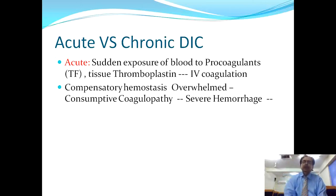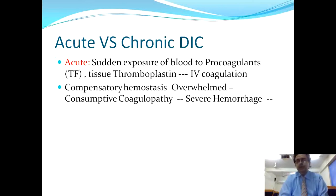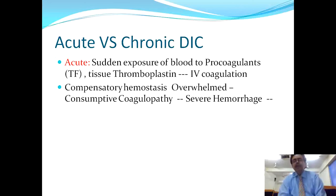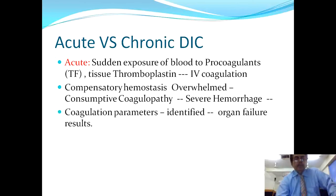The more the coagulation, the more the consumptive coagulopathy. In consumptive coagulopathy, platelets and clotting factors like fibrin and fibrinogen are consumed, and therefore clot failure results and the patient transforms into the hemorrhagic variety of DIC. The coagulation parameters become deranged and ultimately the patient progresses to organ failure.